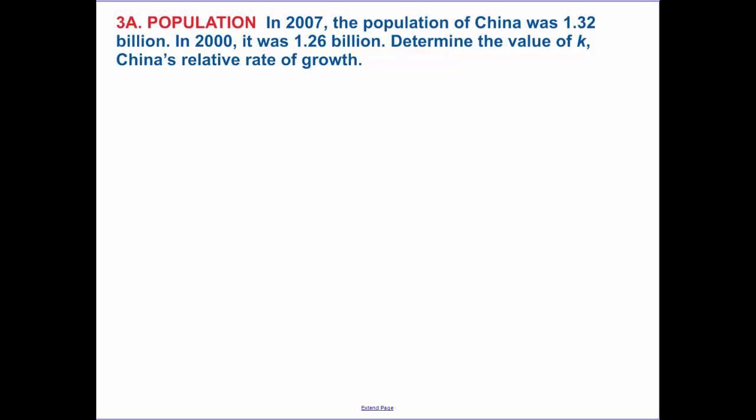In 2007 the population of China was 1.32 billion. In 2000 it was 1.26. Determine the value of k and China's relative rate of growth. So let's make t equaling 0 be 2000. So then t equals 7 is going to be 2007. So they tell me then this is my initial amount.